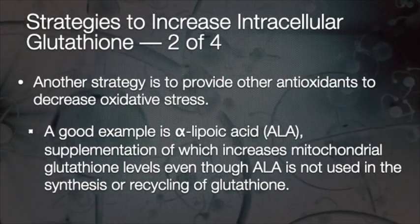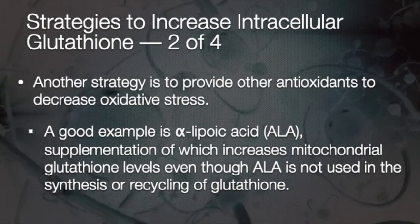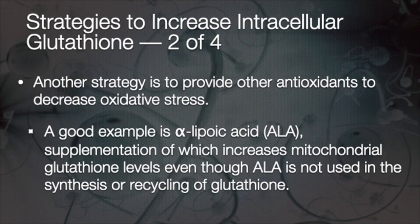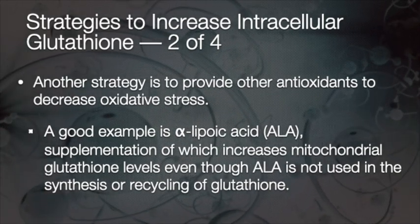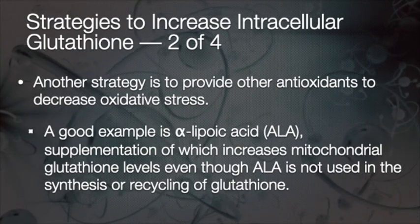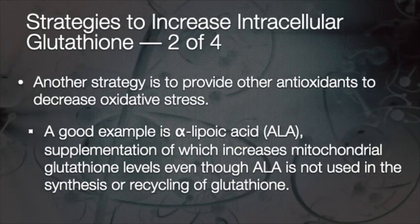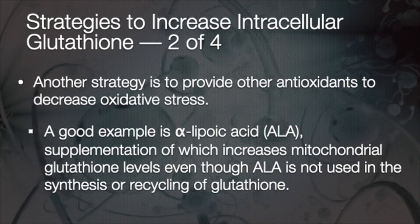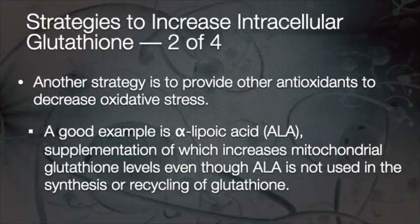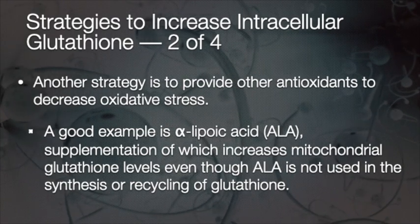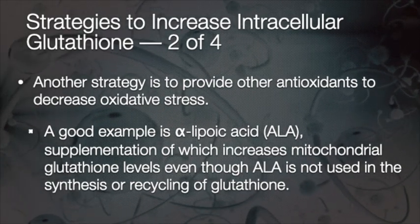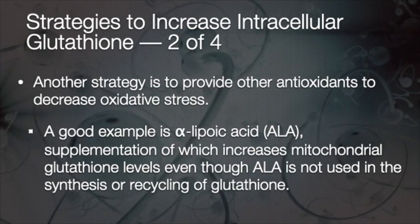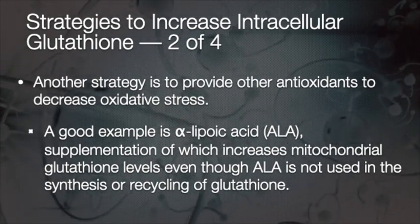Another strategy is to provide other antioxidants to decrease oxidative stress, giving glutathione some breathing space and giving cells enough time to replenish glutathione. A good example is alpha-lipoic acid (ALA). Supplementing with ALA increases mitochondrial glutathione levels — which is fantastic — because even though it doesn't directly increase glutathione, it helps by reducing oxidative stress on the cells.